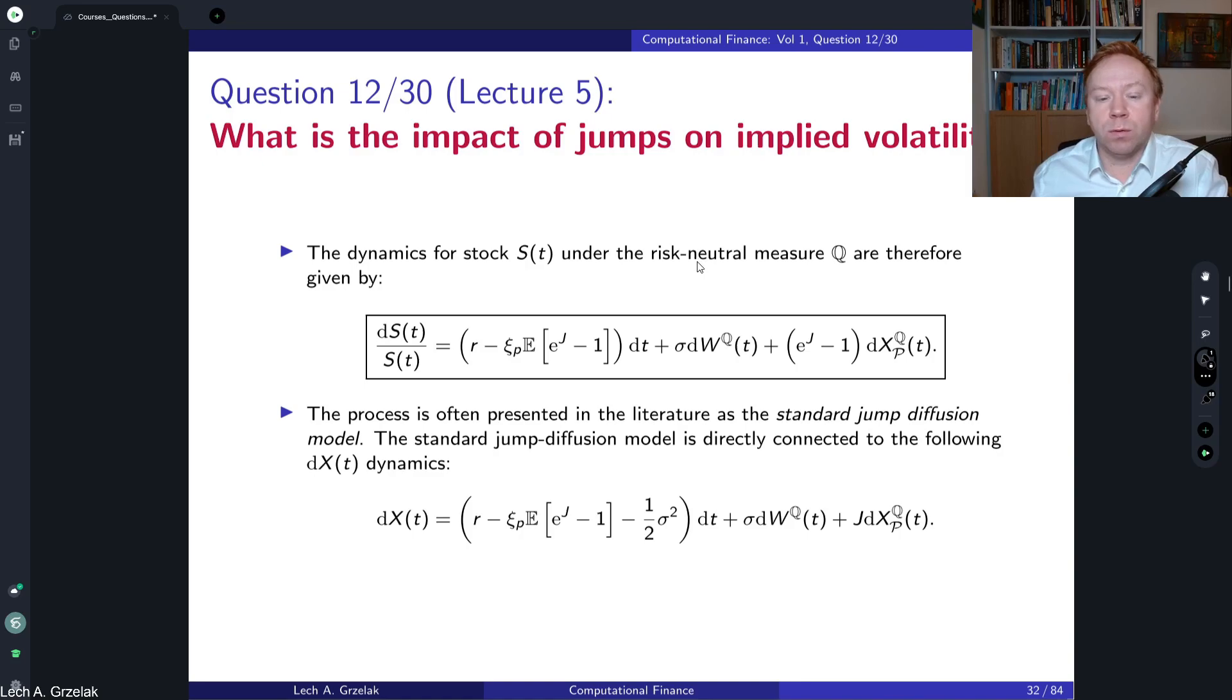We will consider the Merton's model, an extension of the Black-Scholes or geometric Brownian motion where we have an additional component which corresponds to a jump. This is the stock dynamics. We have a jump generator, a Poisson process, which tells us whether a jump has happened or hasn't. Then we have a multiplier which tells us about the direction of the jump, whether it's positive or negative, and also shows us how large is the jump.